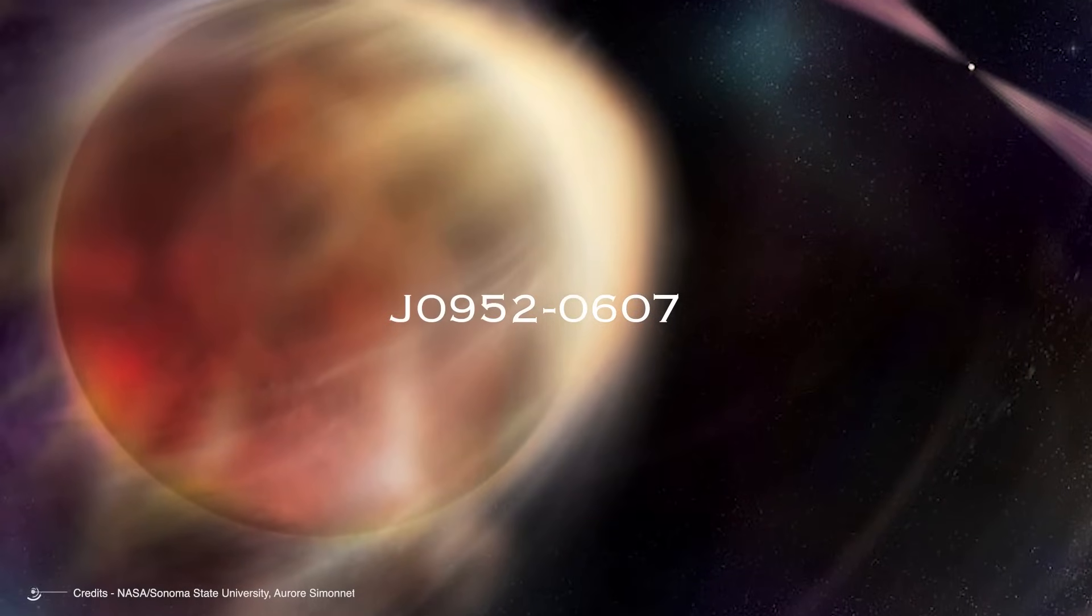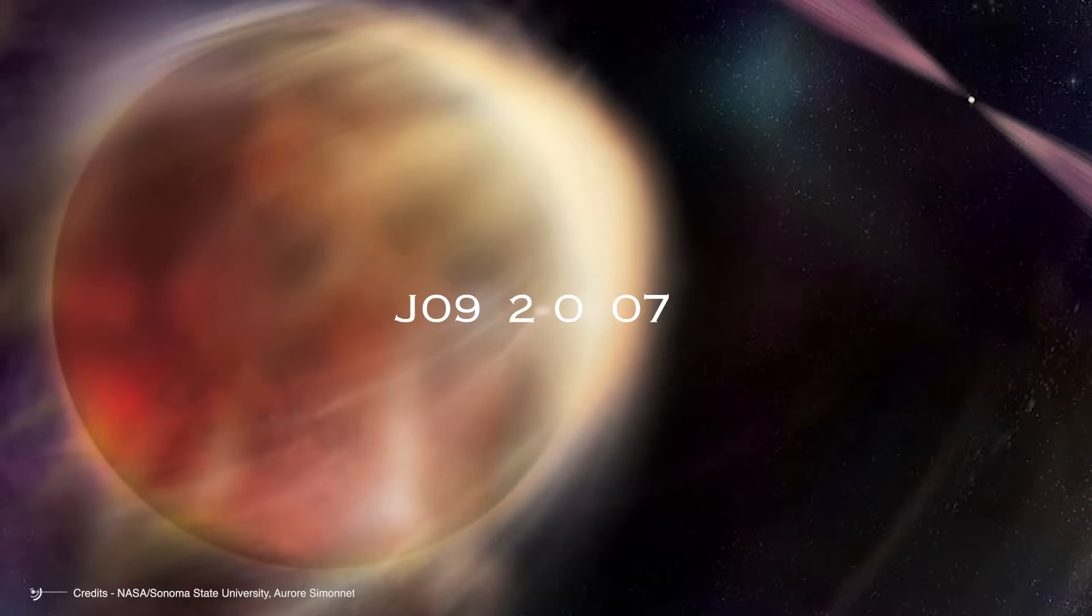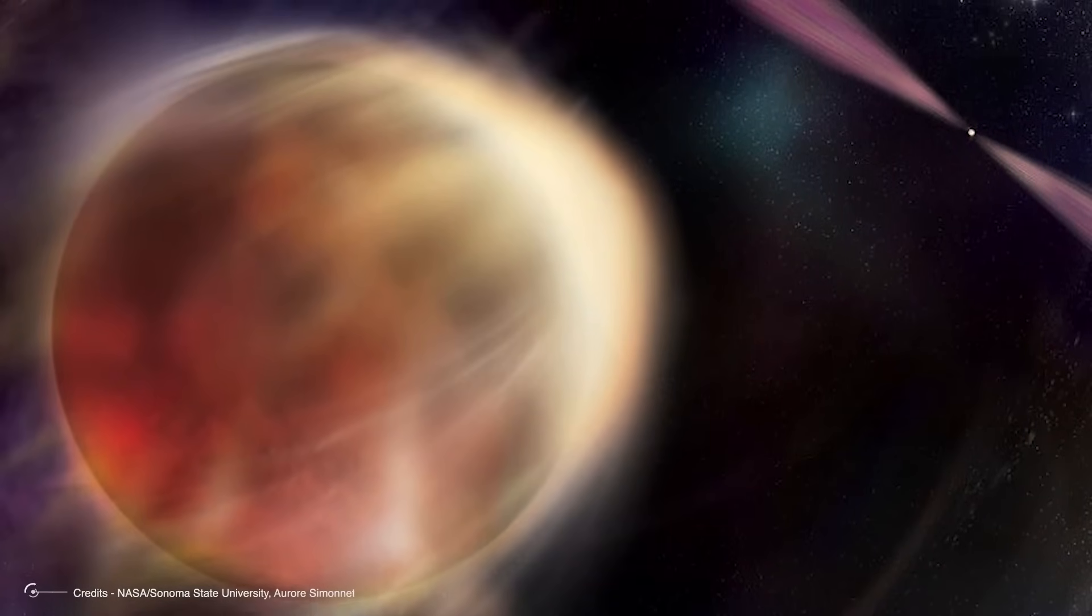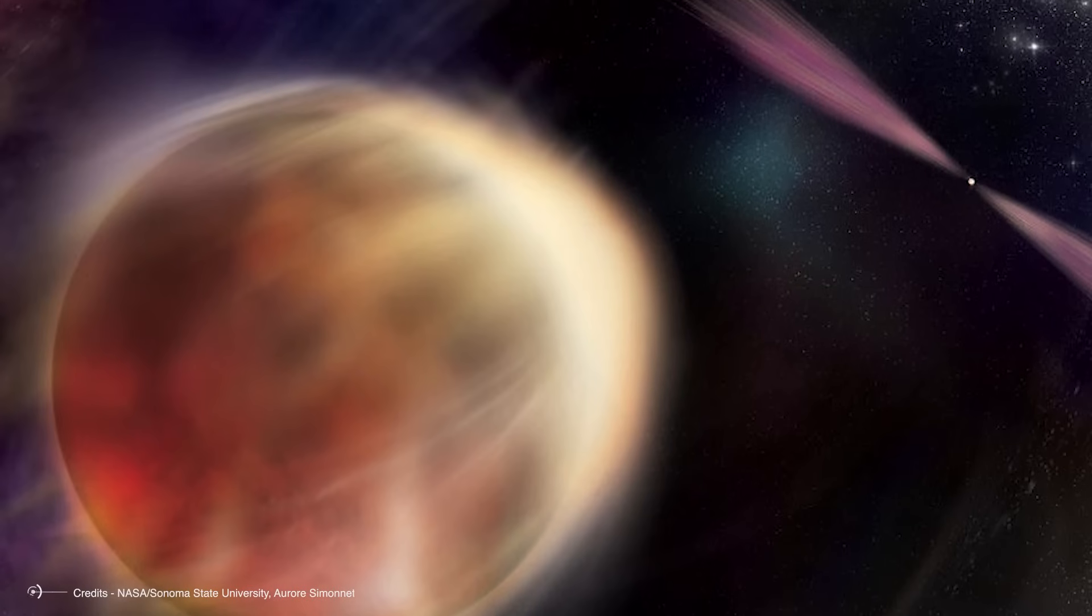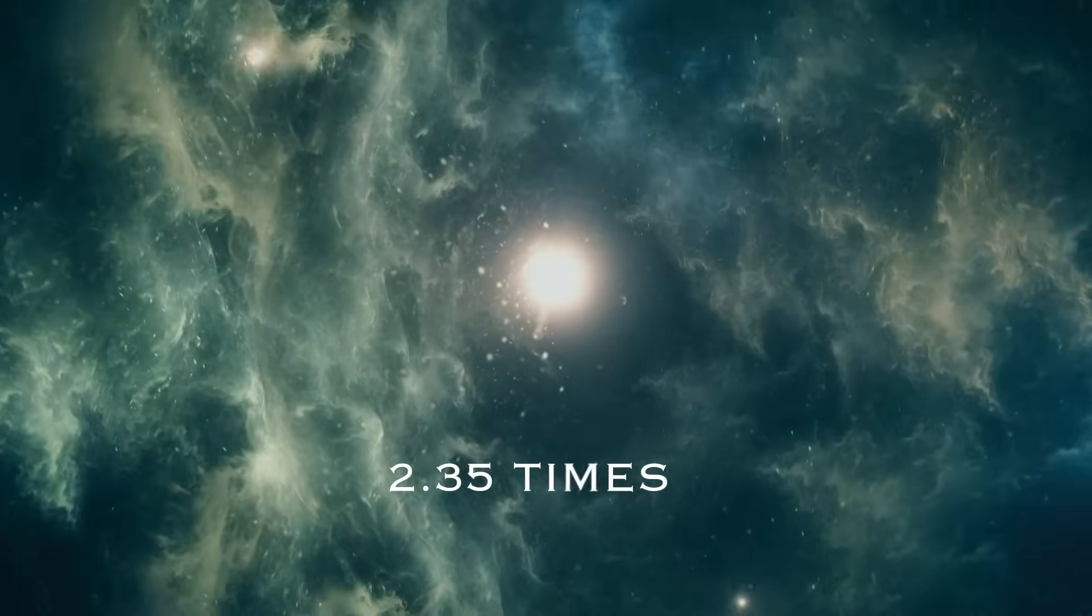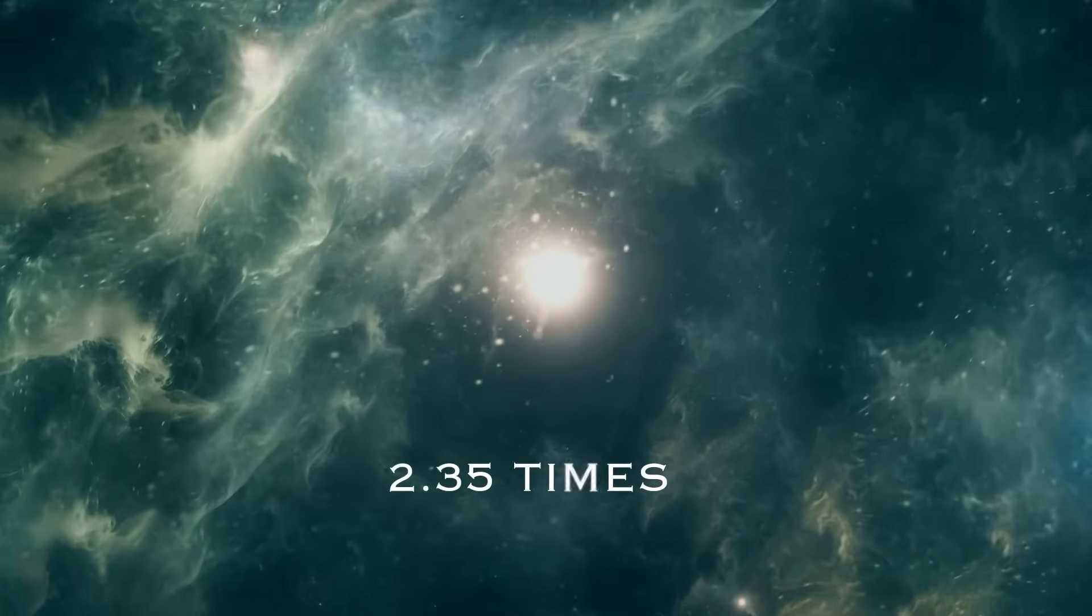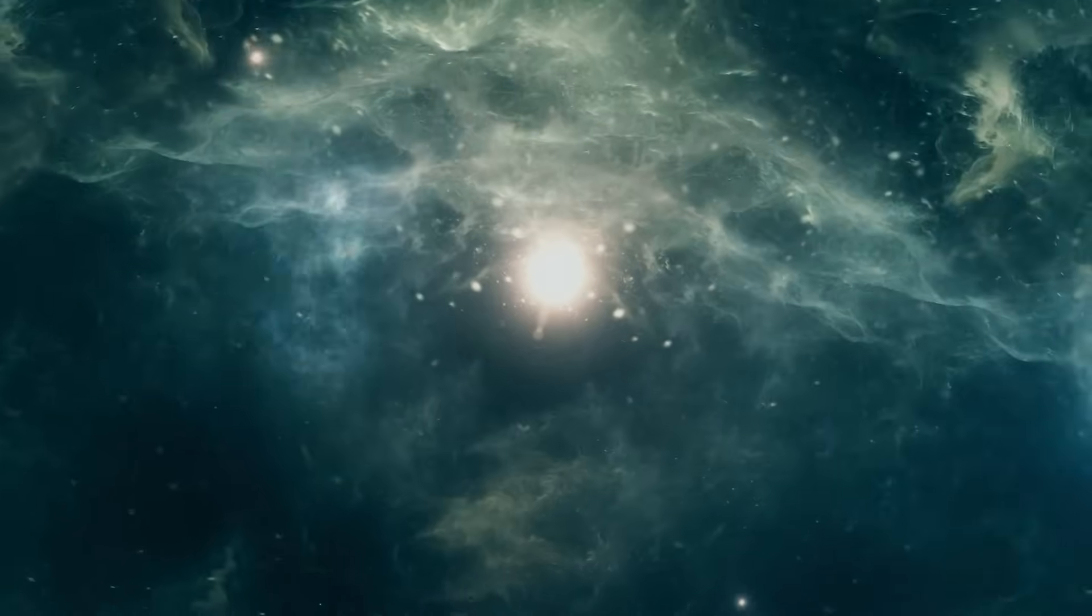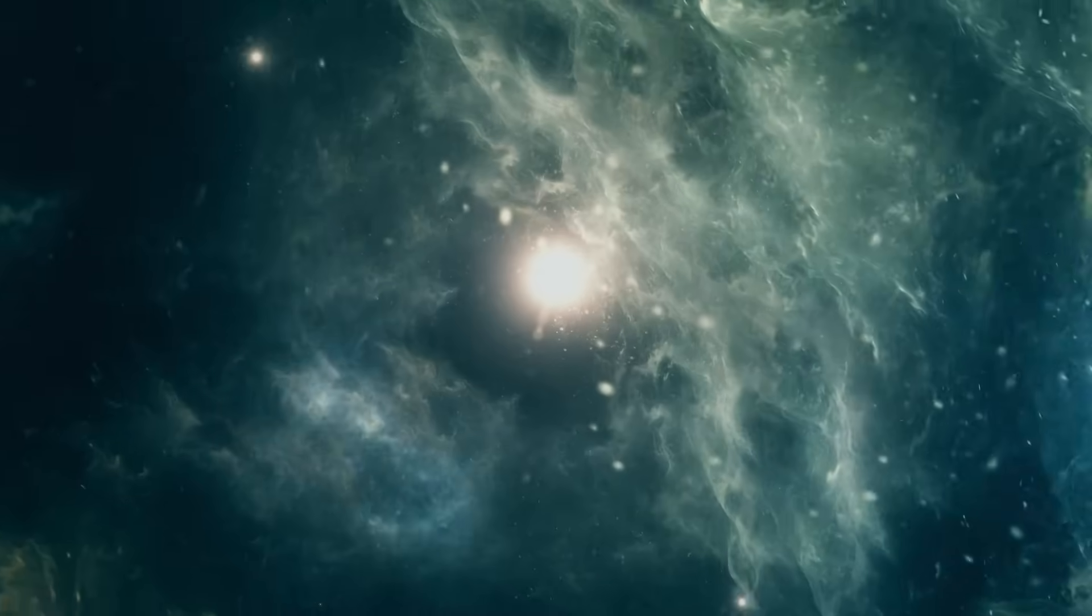J0952-0607, the heaviest known neutron star in our galaxy, is showing unmistakable signs of an impending collapse. This cosmic heavyweight tipping the scales at a mind-boggling 2.35 times the mass of our Sun is now dancing dangerously close to its breaking point.